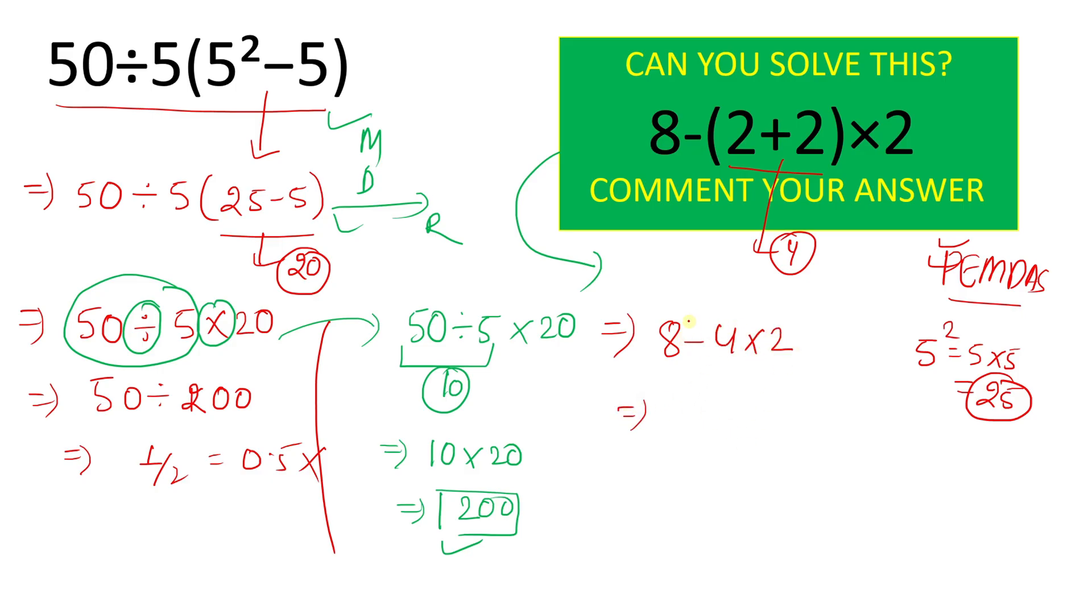Now there are two operations, subtraction and multiplication. And multiplication has higher priority than subtraction, so we will multiply first. 4 times 2 equals 8. And 8 minus 8 equals 0. So 0 is the right answer for the second question.